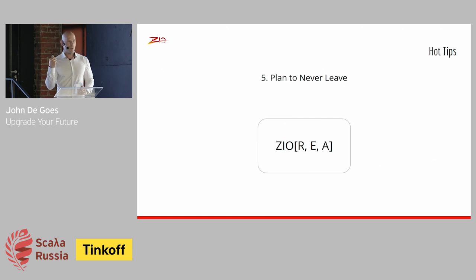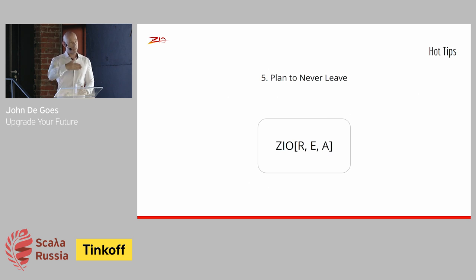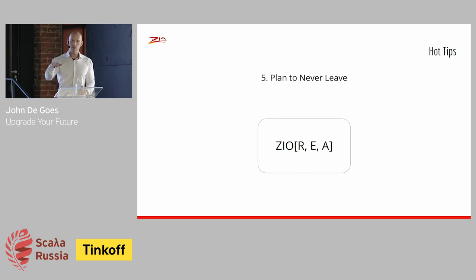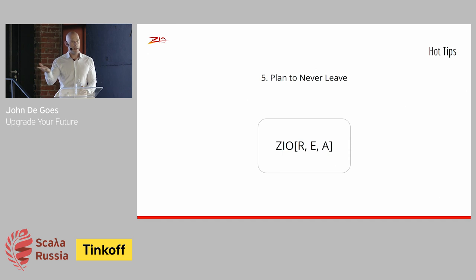Plan to never leave ZIO. Once you enter a ZIO effect type, ideally you stay there for the rest of your application. Any time you run a ZIO effect you convert something lazy into something eager, changing how you think about your programs and losing ZIO's benefits beyond that boundary. Try to keep as much of your codebase inside ZIO as possible. You can take Trys, Futures, Eithers, Options — all these different data types — and convert them into a ZIO effect, lifting everything up to ZIO's level for more of your application.